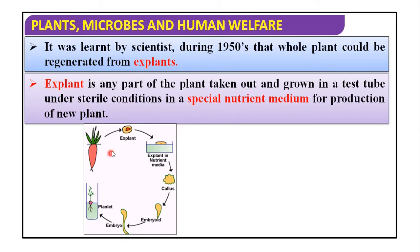We take the explant and culture it on a nutrient medium. This is the nutrient medium. This is the explant. This is the callus development — the growth after culturing the explant. The embryoid and embryo are formed, and this is the plant field.